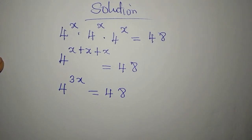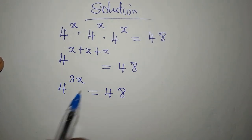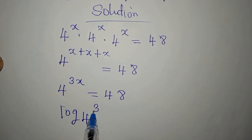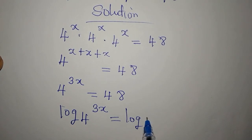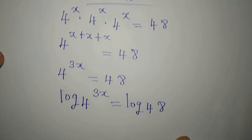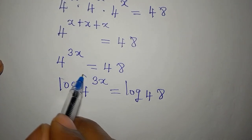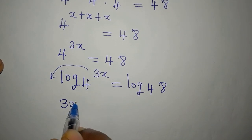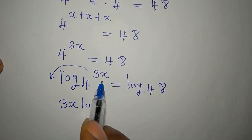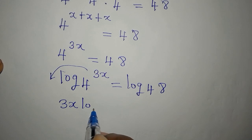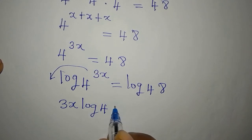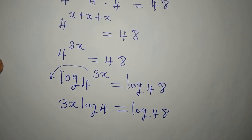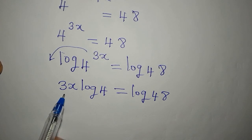The next thing we do is take the log of both sides, knowing that 48 cannot be written in base-4 form. So we have log of 4 to the power of 3x equals log 48. There is a law that says the power can come down in front, giving us 3x times log 4 equals log 48.